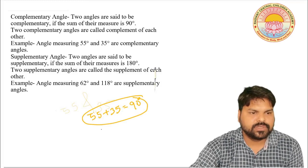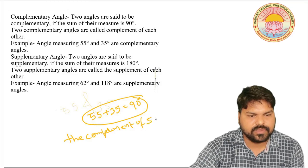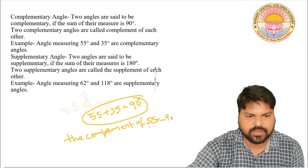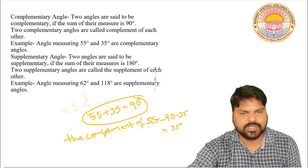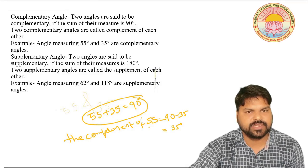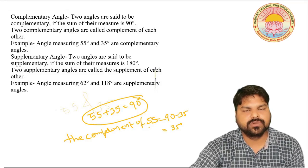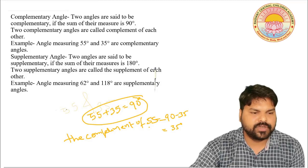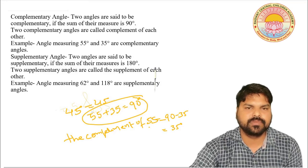For example, if you are asked what is the complement of 55 degrees, the answer is 90 minus 55, which equals 35 degrees. The sum of two complementary angles is 90 degrees. Two complementary angles are called complements of each other. For example, 45 is the complement of 45, since 45 plus 45 equals 90.